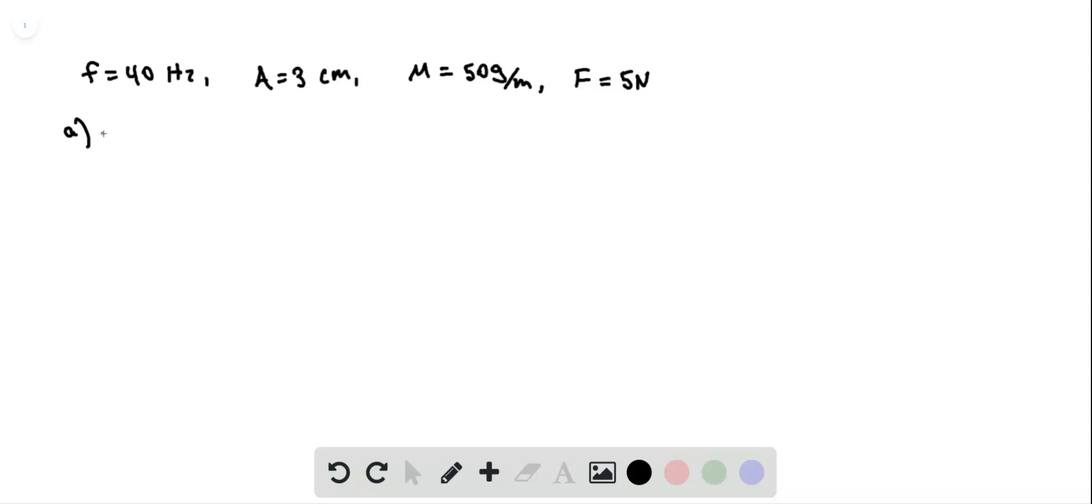First, we want to find the speed of the rope. And we can use our handy equation v is the square root of F over mu. And that tells us that it is, plugging in the tension here and mu here, that tells us that it is 10 m per second.